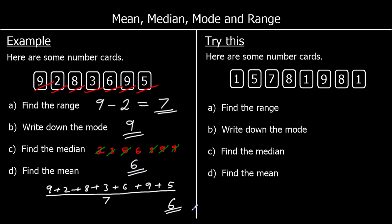The range is the biggest number take away the smallest number. The biggest number is 9, the smallest is 1. 9 take away 1 is 8. The mode is the number that appears most times. That's 1 — there are 3 ones, and there aren't 3 of anything else.